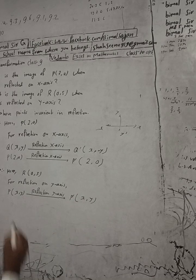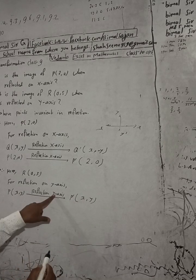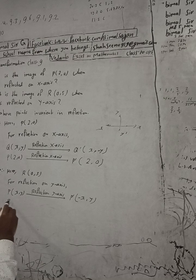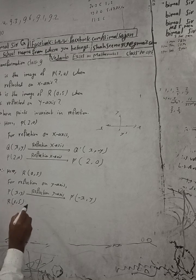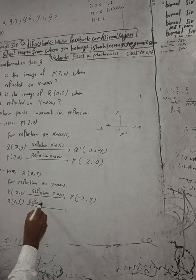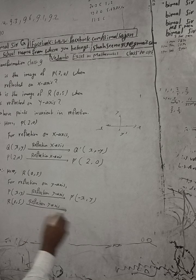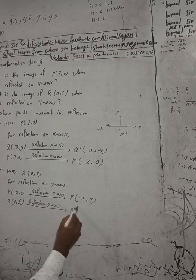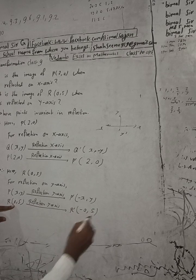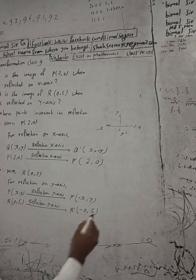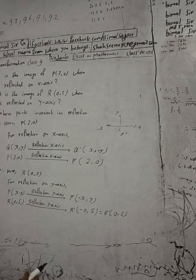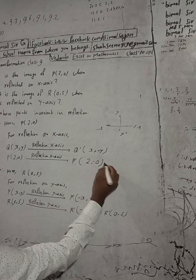For y-axis reflection, the y-coordinate stays the same. So R is (0, 5), and its reflection gives minus 0 comma 5, which is (0, 5) — same point. The answer is (0, 5).